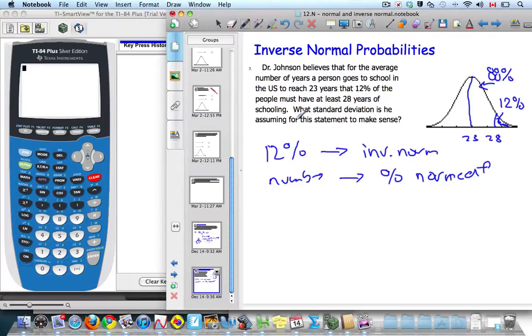What's the standard deviation he's assuming for the statement to make sense? Well, in order to do it, I know my Z-score is equal to my number, which is 28, minus the mean, over the standard deviation. I'm looking for the standard deviation.